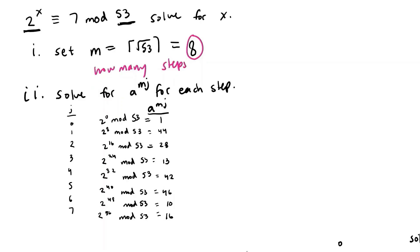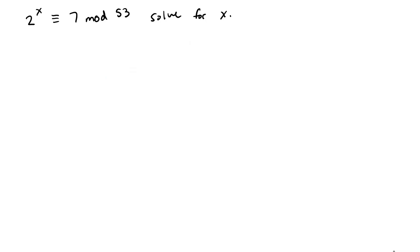So this is our completed chart and we have calculated all of our a to the mj for each value of j from 0 to 7 we have 1, 44, 28, 13, 42, 46, 10, and 16. So now that we've completed this whole set of numbers we want to go ahead and call this L1 and we will compare L1 to another set of numbers L2 which we will calculate in our next step.